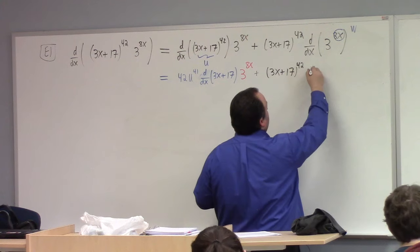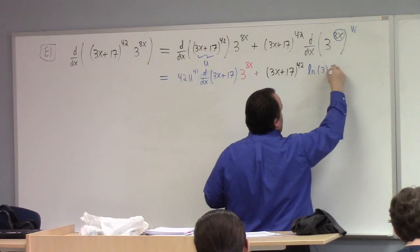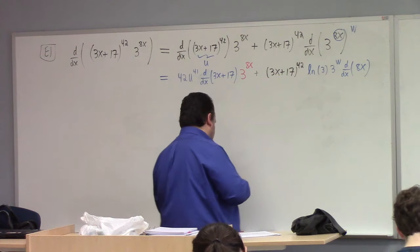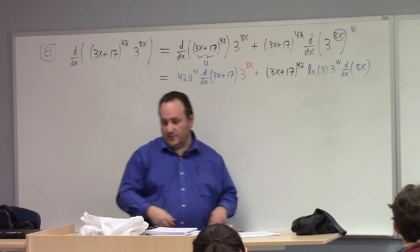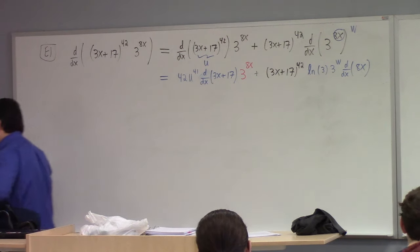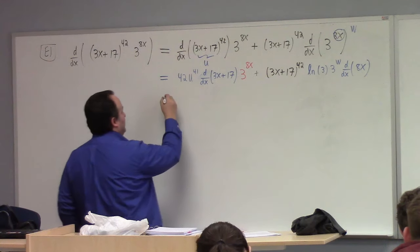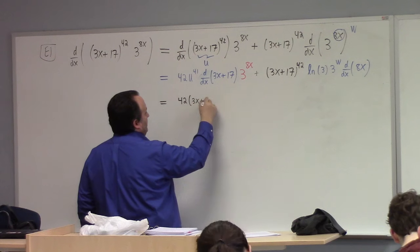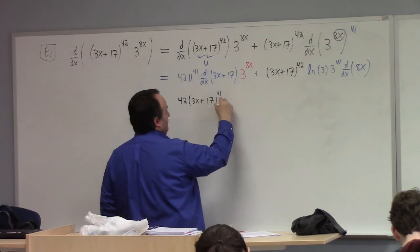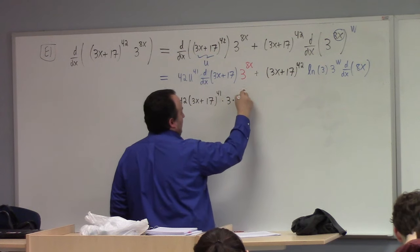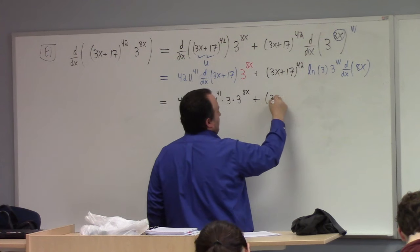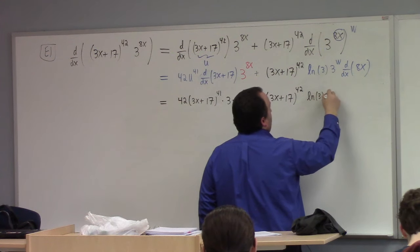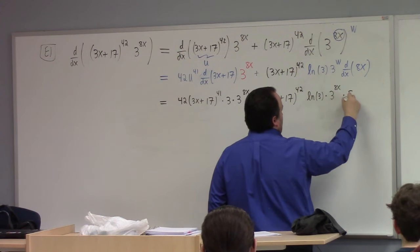So I get natural log of 3 times 3^W, and then the derivative of W, which is 8x. Finishing move: I've got 42 times (3x + 17)^41 times 3 — that's d/dx of (3x + 17) — times 3^(8x), plus (3x + 17)^42 times the natural log of 3, times 3^(8x), times 8.